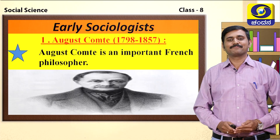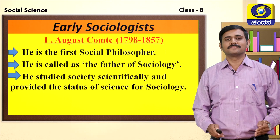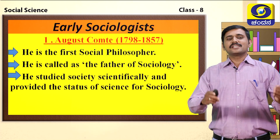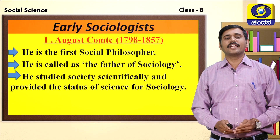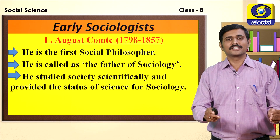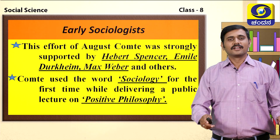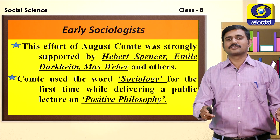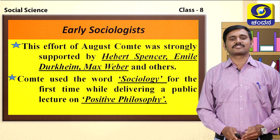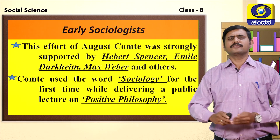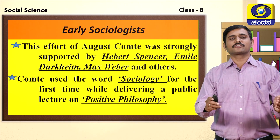Auguste Comte is an important French philosopher who lived between 1798 to 1857. He is the first social philosopher and he was called the father of sociology. He studied society scientifically and provided the status of science for sociology. He tried to provide the position of science to sociology, and his efforts were appreciated by many contemporary sociologists like Herbert Spencer, Emily Durkheim, and Max Weber. Comte was the first person to use the word 'sociology' in his publication Positive Philosophy.